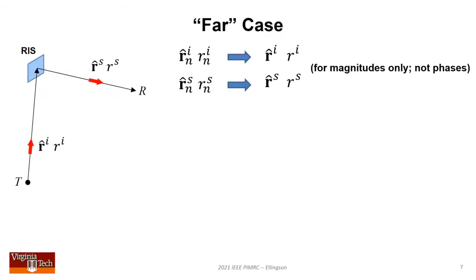Now that basics are in place, I'd like to see what this model says about the far case. By far, I mean path distances are approximately independent of element index in magnitude calculations. Phase calculations remain exact. This results in dramatic simplification. Far case does not necessarily correspond to electromagnetic far field, although they're somewhat related. When I say far case, it's simply referring to this approximation.